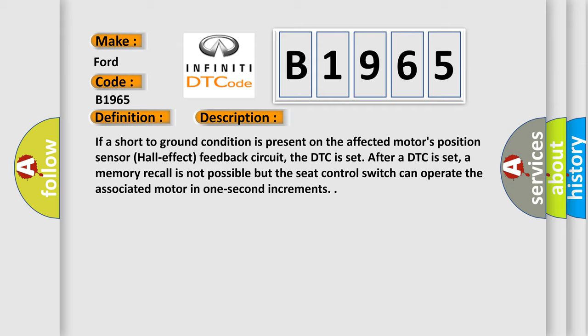Here is a short description of this DTC code: if a short to ground condition is present on the affected motor's position sensor hall effect feedback circuit, the DTC is set. After a DTC is set, a memory recall is not possible, but the seat control switch can operate the associated motor in one-second increments.